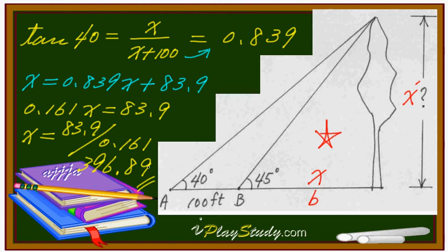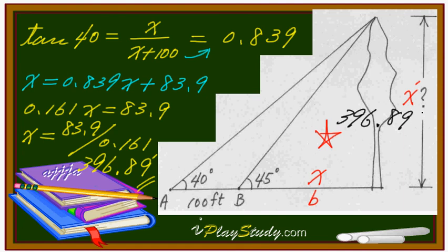We must use the calculator for this. The unit is feet, so we put the feet sign. The height of this tree is 396.89 feet.